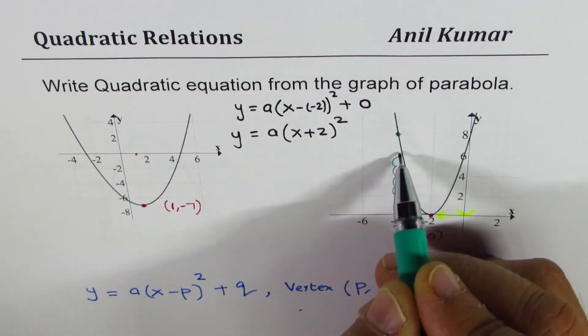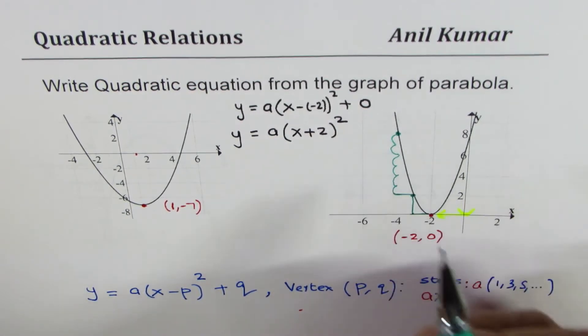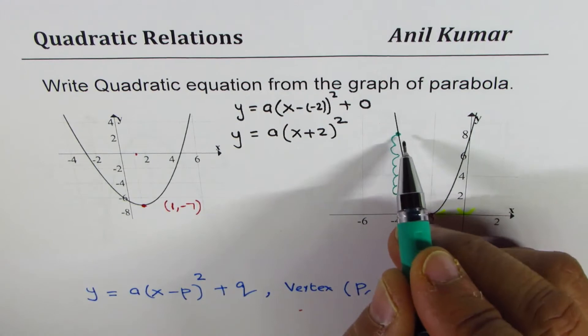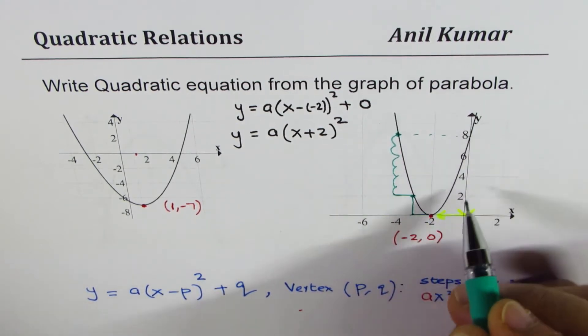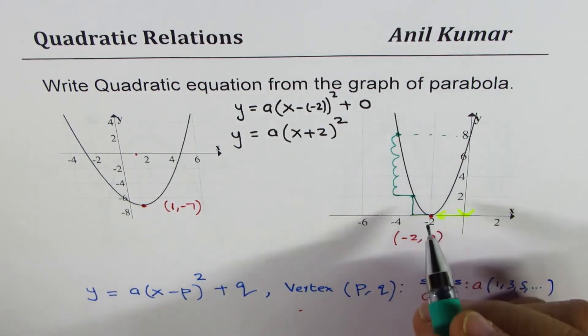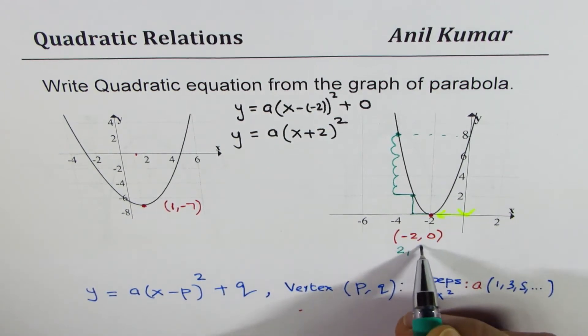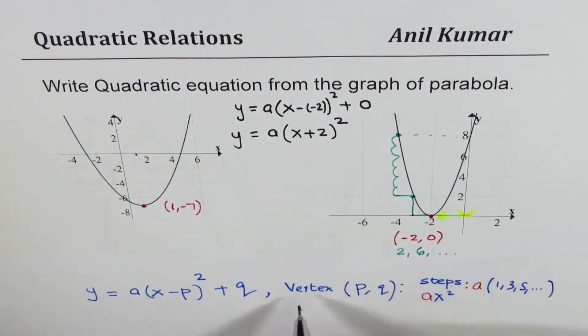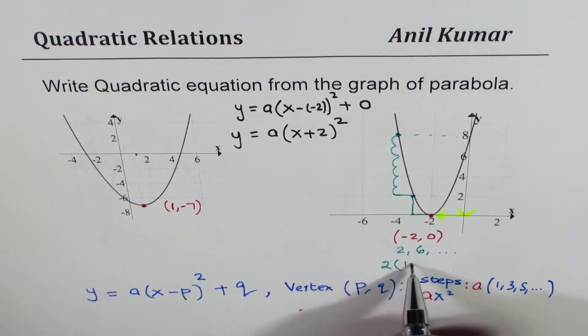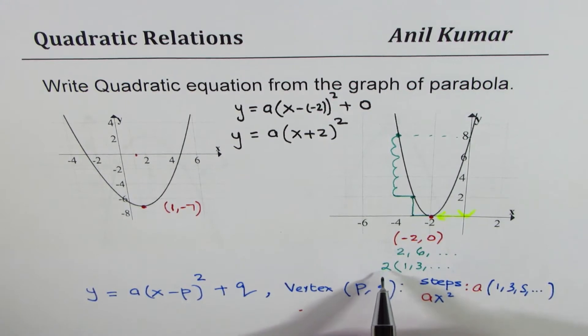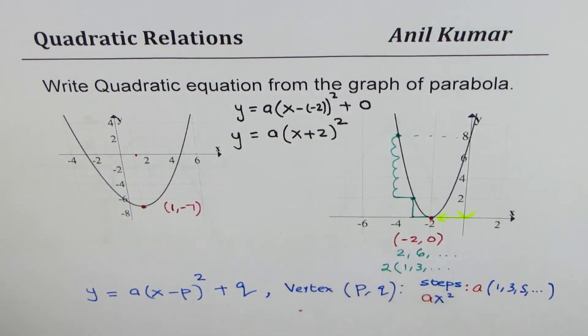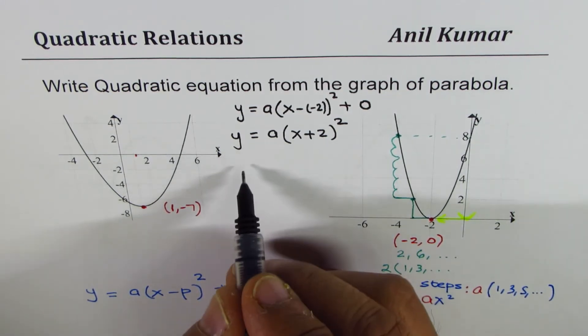So I go from two to eight, so I'm going six units up. This point is at eight. So the steps being followed here are two, six and so on, which is two times one, three and so on. And that means that a value is two.